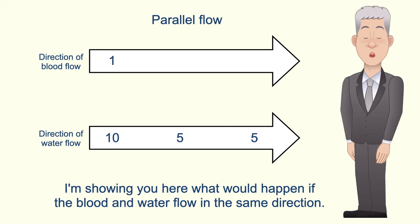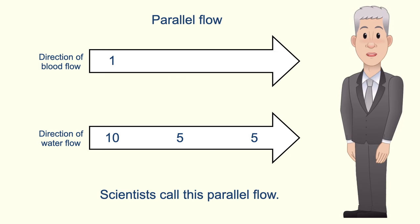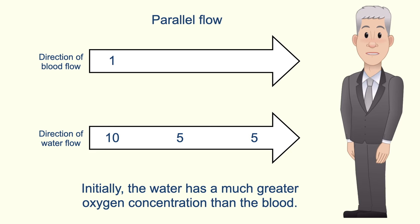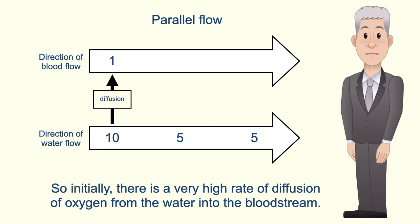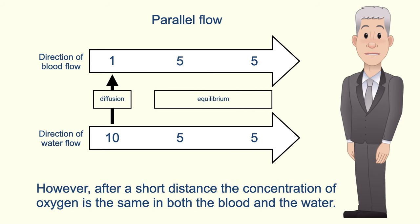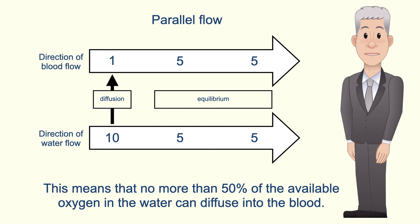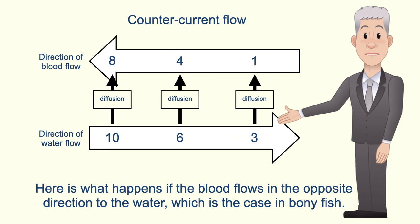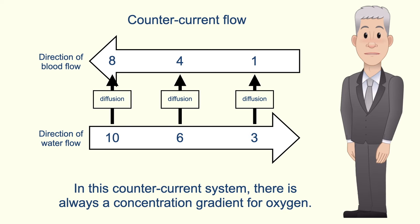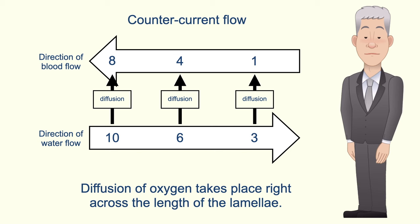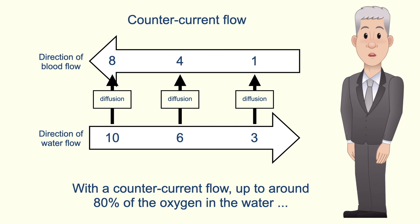Here's what would happen if the blood and water flowed in the same direction — scientists call this parallel flow. The numbers give an approximate idea of the relative concentration of oxygen. Initially the water has a much greater oxygen concentration than the blood, so there's a very high rate of diffusion. However, after a short distance the concentration is the same in both blood and water — scientists call this equilibrium — and at this point diffusion stops. This means no more than 50 percent of the available oxygen in the water can diffuse into the blood. In the counter current system used by bony fish, there is always a concentration gradient for oxygen, equilibrium is never reached, and diffusion takes place right across the length of the lamellae. With counter current flow, up to around 80 percent of the oxygen in the water diffuses into the bloodstream.